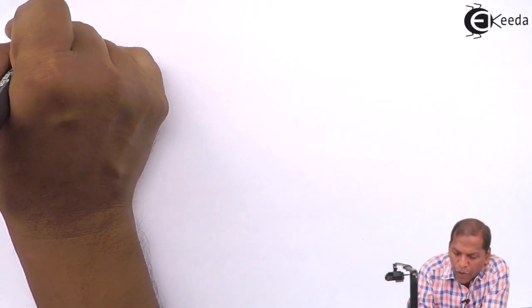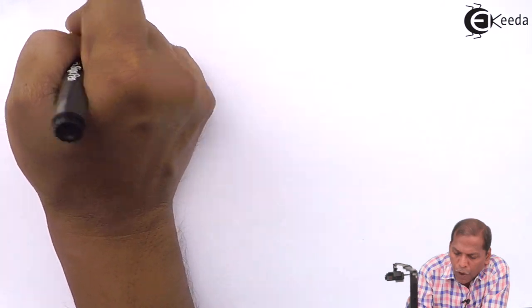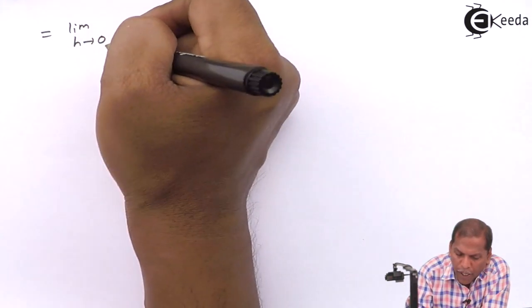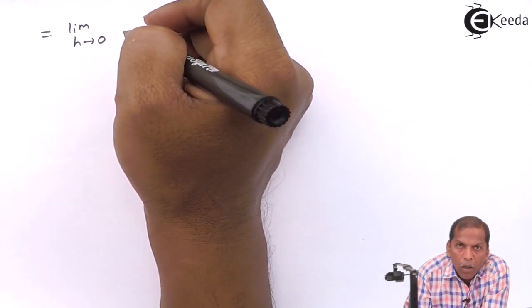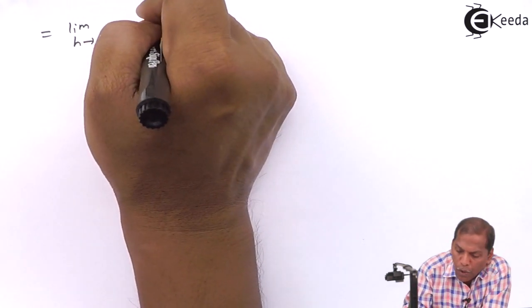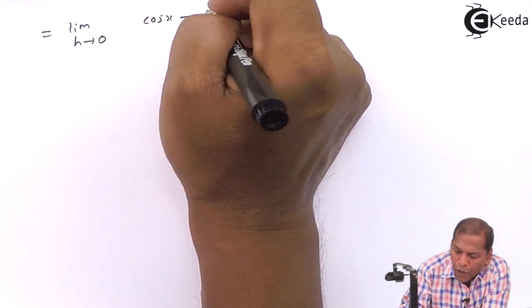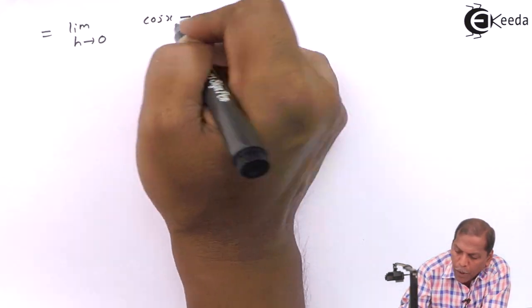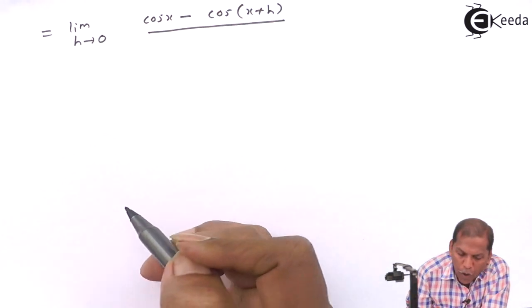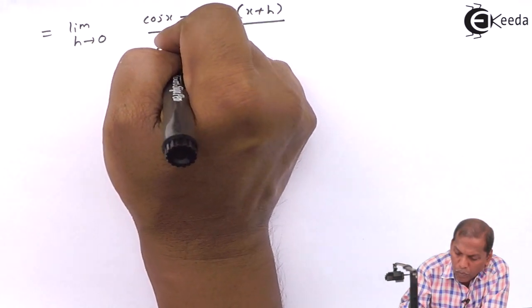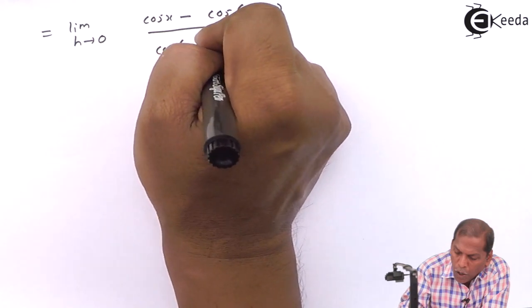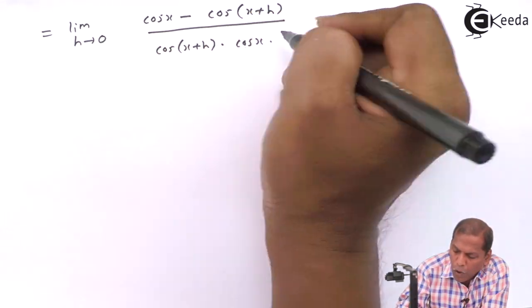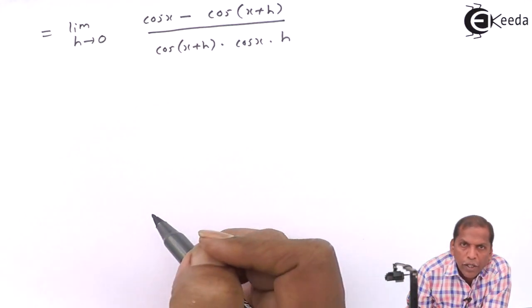The next step: here we go for cross multiplication. So on cross multiplying we get limit h tends to 0 of cos(x) minus cos(x + h), upon cos(x + h) into cos(x) into h.